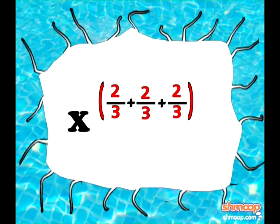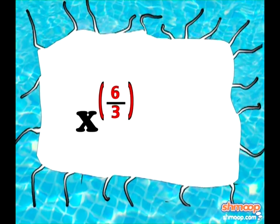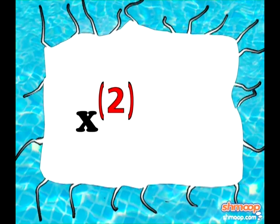Adding 2 thirds plus 2 thirds plus 2 thirds gives us 6 thirds. Or to simplify it, we divide 6 by 3 to get 2,